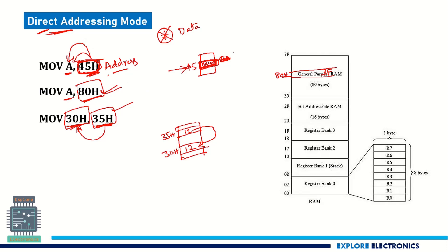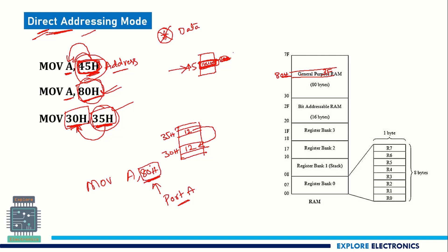Remember, data will be present at these addresses — that is why it is direct addressing mode. We can also have MOV A, 0A0H, where 0A0H corresponds to Port A. We know that Port A's address is 0A0H, meaning whatever content is present in Port A through that memory location will be loaded to A. This will be a memory location — that is what we need to observe here.